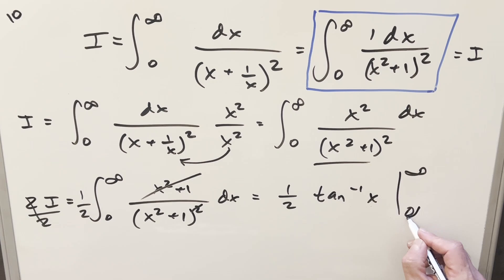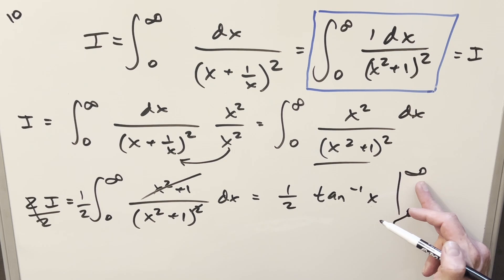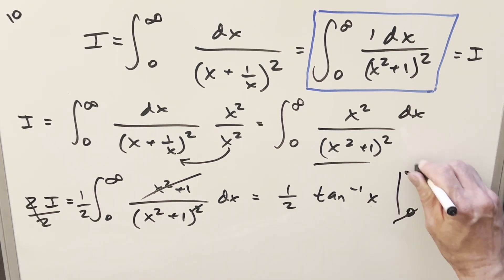So integrating this, we just get half arctan of x evaluated from zero to infinity. Arctan at zero is just zero. I think I missed right there.